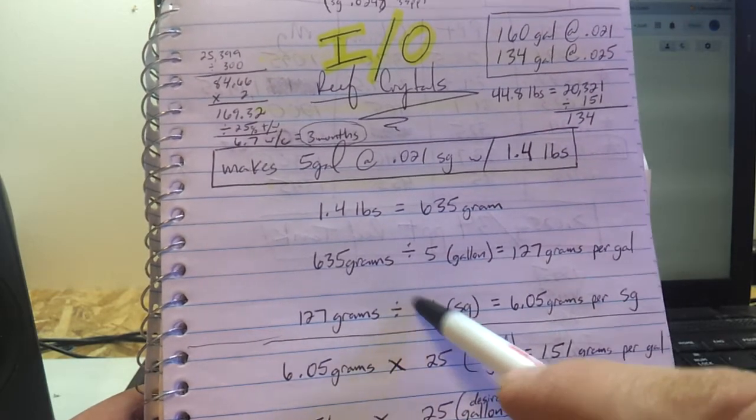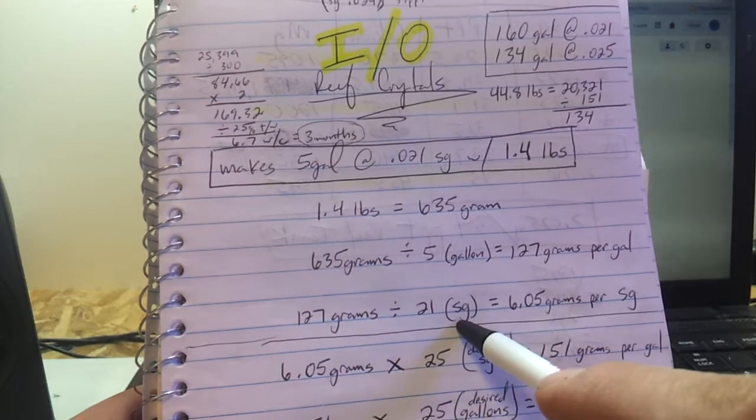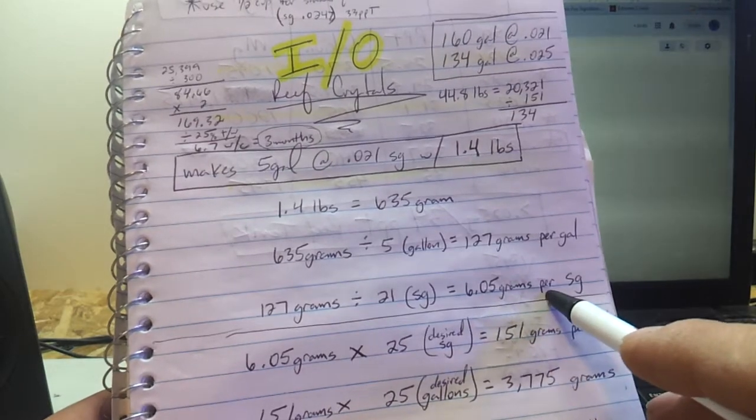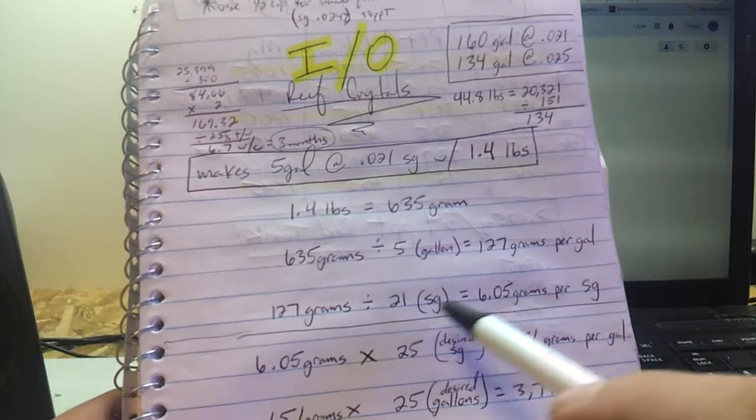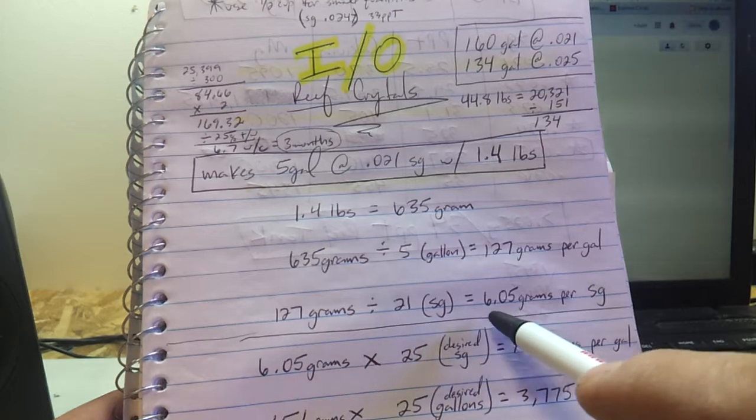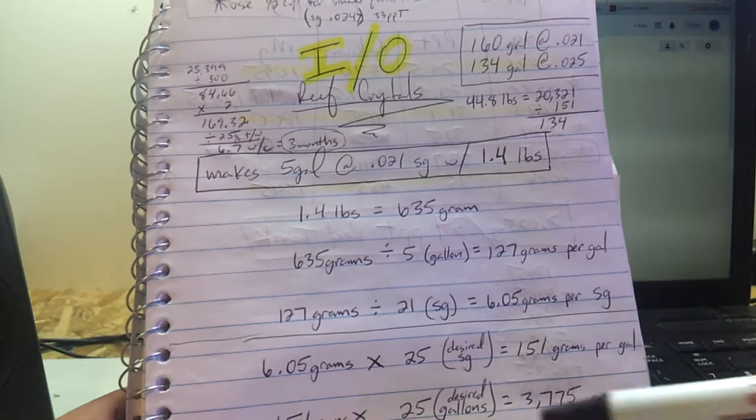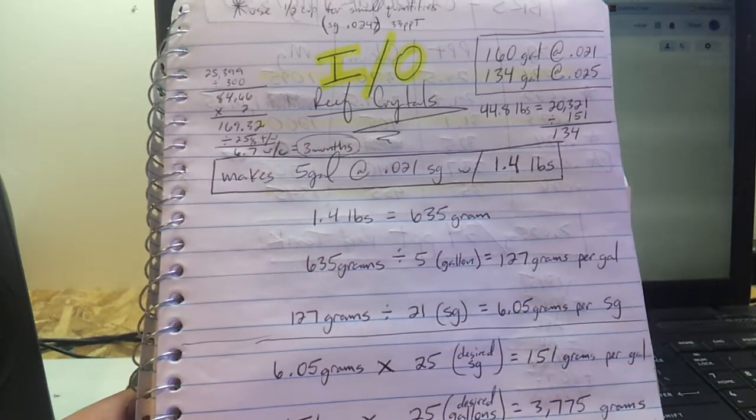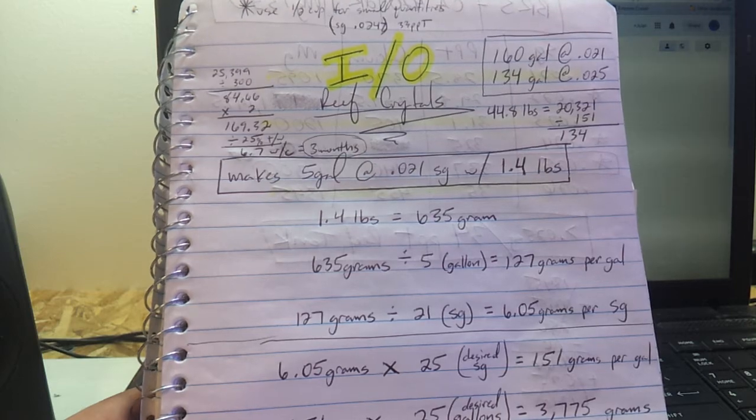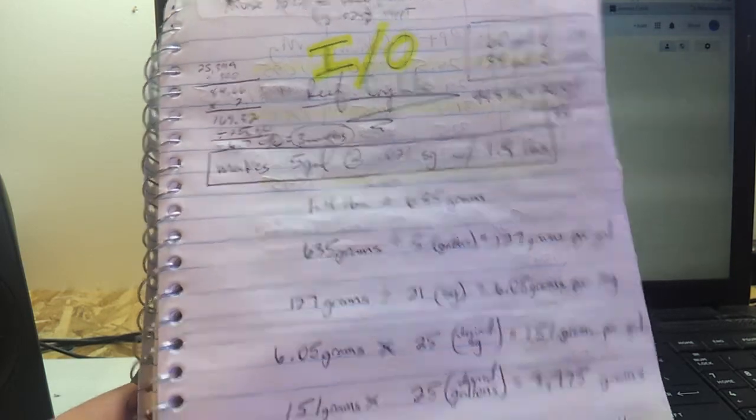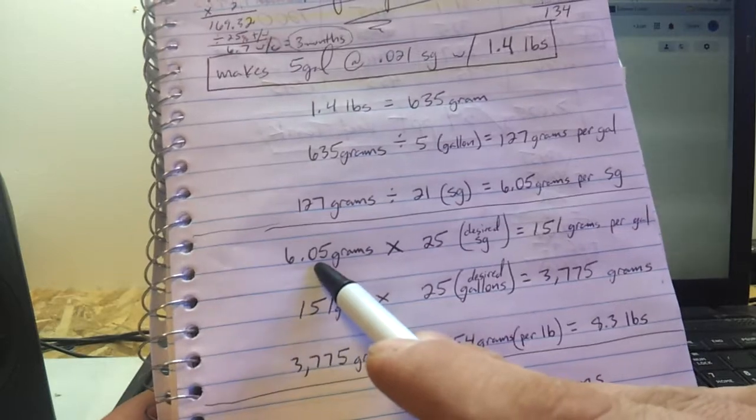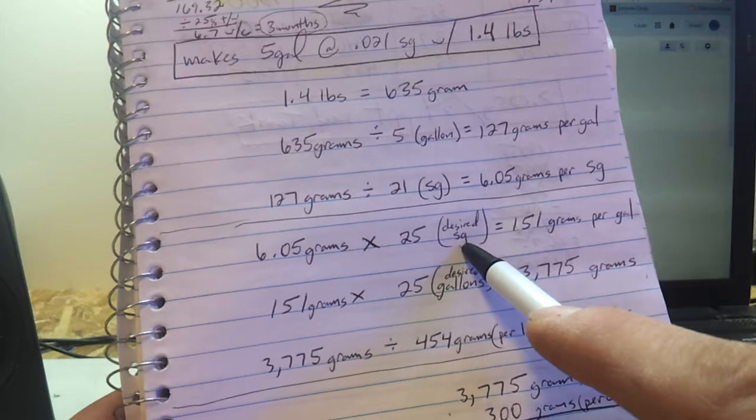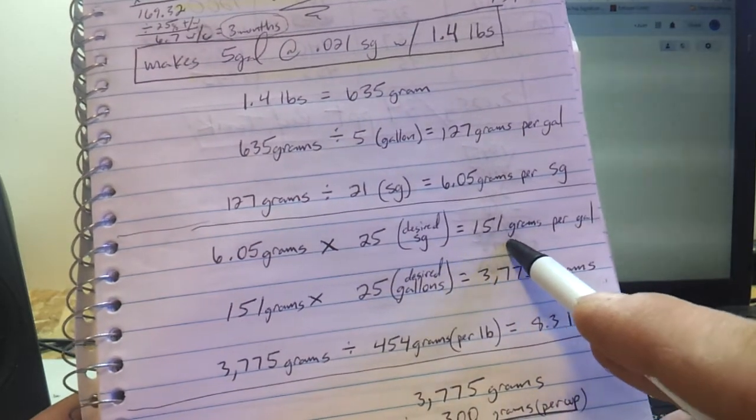Now 127 grams per gallon should give you the salinity of 21. So you divide the 127 by the 21 specific gravity and it gives you 6.05 grams per specific gravity. So the 6.05 grams is basically like the 21, 22, 23, 24, 25, 26. So every time you add 6 grams to a gallon the salinity will go from 21 to 22. So what I did was I did 6.05 grams times 25 which is my desired specific gravity and it gives me 151 grams per gallon.